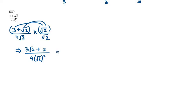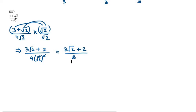Under root 2 squared by under root 2 is 2. So what will come to be? We get 3 under root 2 plus 2 over 4 into 2 is 8. So your answer is 3 under root 2 plus 2 over 8.